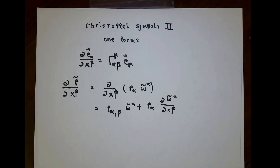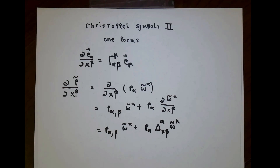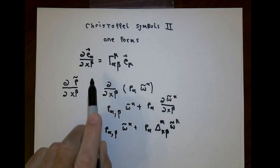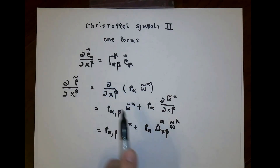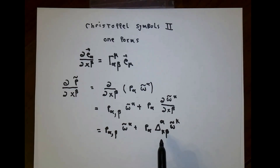By way of analogy, if I have a one-form p̃ and I want to look at its partial derivative with respect to x^β, I can do exactly the same kind of calculation as before, including both the dependence on the components of the one-form and how the basis one-forms depend on position. The one-forms form a vector space; the ω̃ quantities form a basis for that space. So in exactly the same way as we did for partial derivatives of basis vectors, I can write the partial derivative of a basis one-form as some linear combination of basis one-forms. I'll call the coefficients δ^α_{κβ} in analogy to the Christoffel symbols.